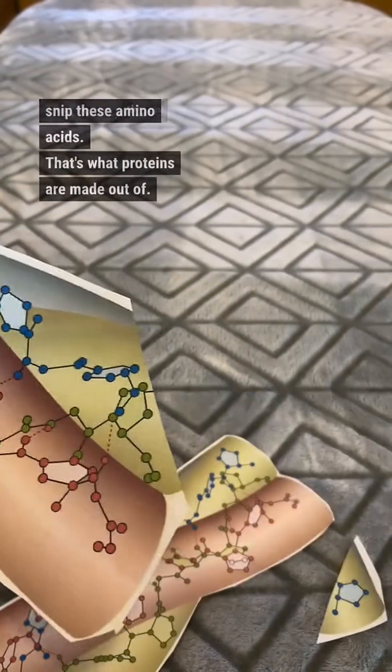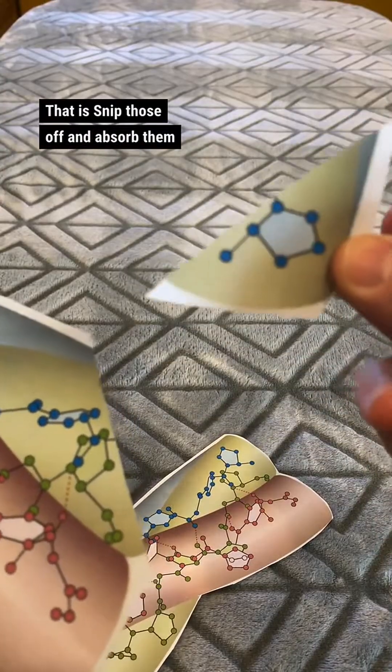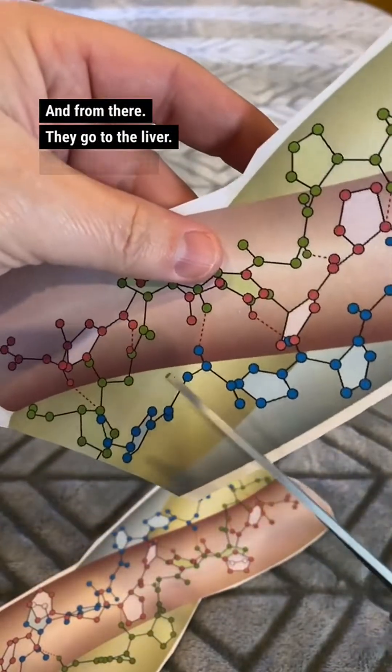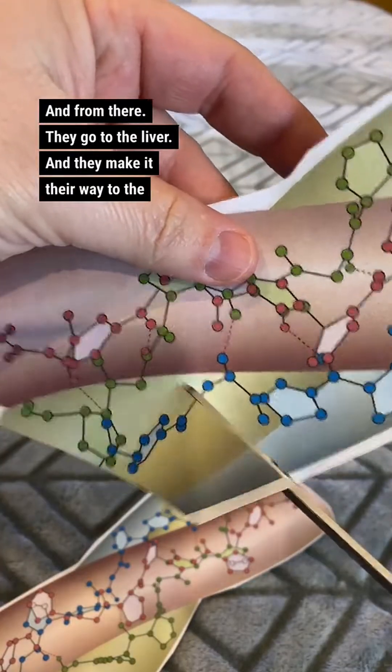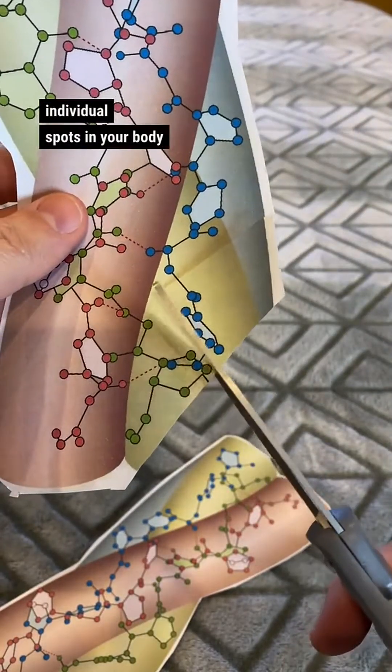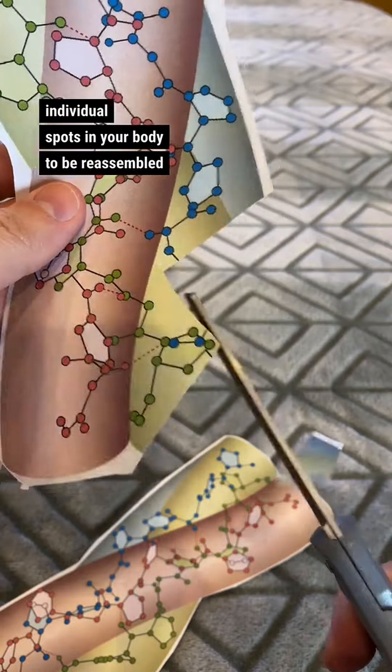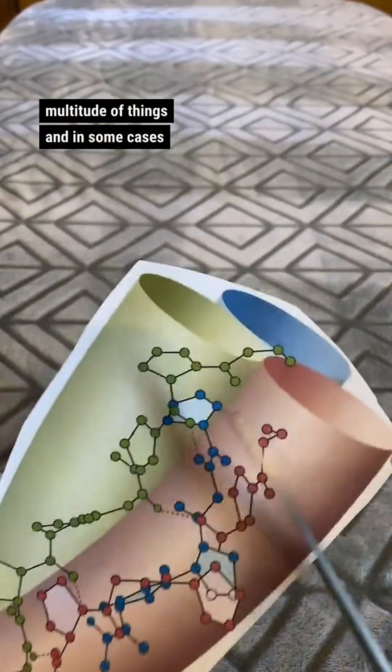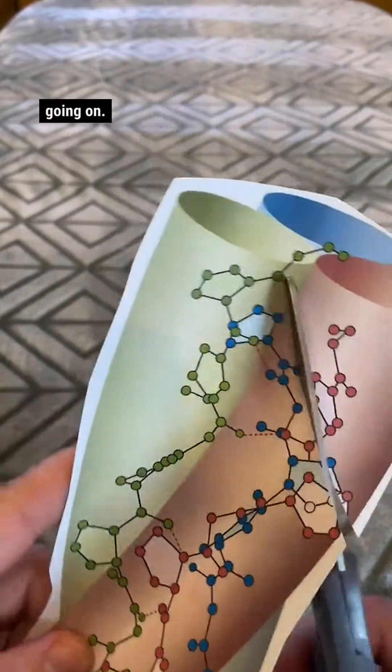That's what proteins are made out of. They just snip those off and absorb them right into your bloodstream, and from there they go to the liver, and they make their way to the individual spots in your body to be reassembled as a multitude of things, and in some cases collagen. So that's what's going on anytime you eat a protein.